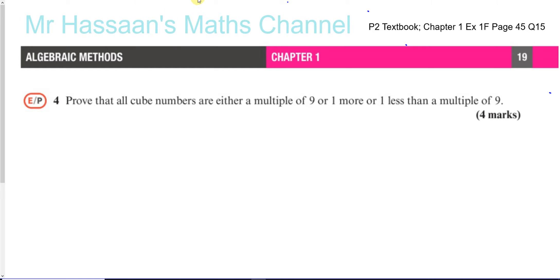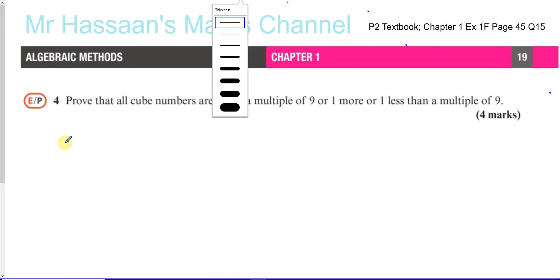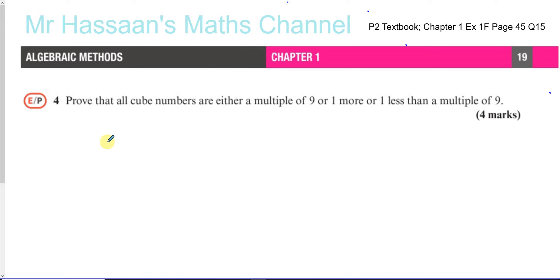I'm going to start off now. They asked me to answer the questions which have this EP symbol in front of them. The question says: prove that all cube numbers are either a multiple of nine, or one more or one less than a multiple of nine.